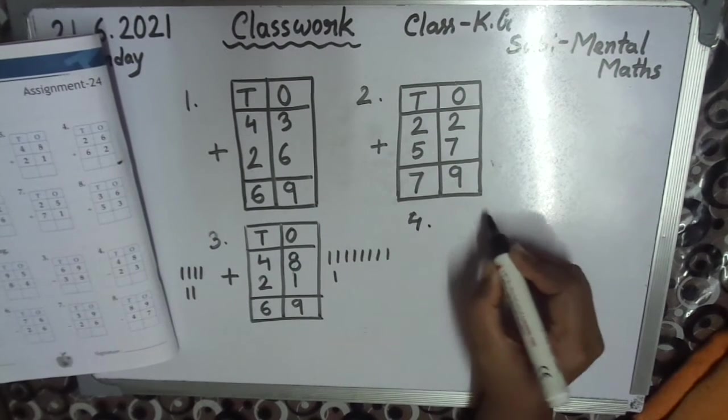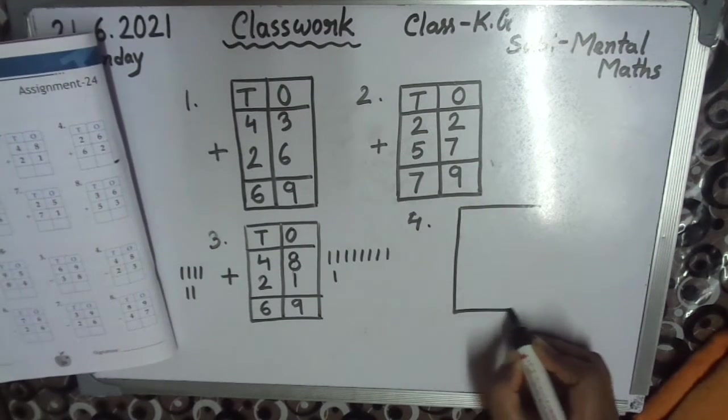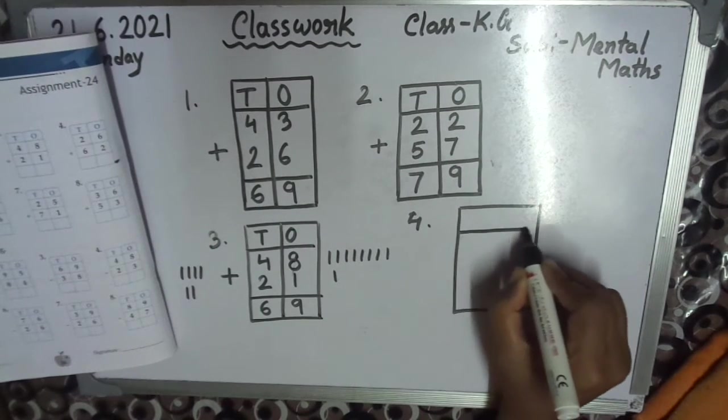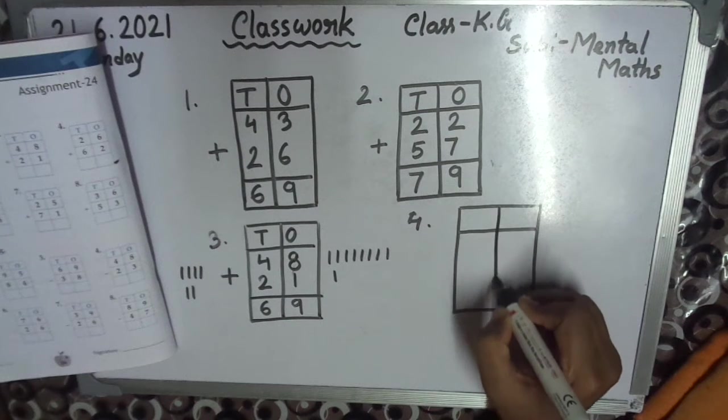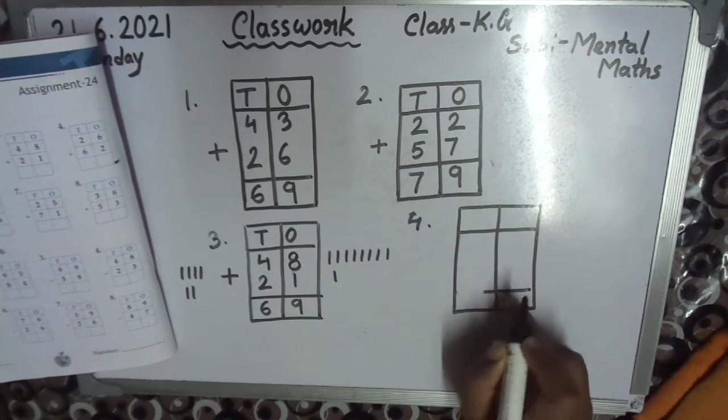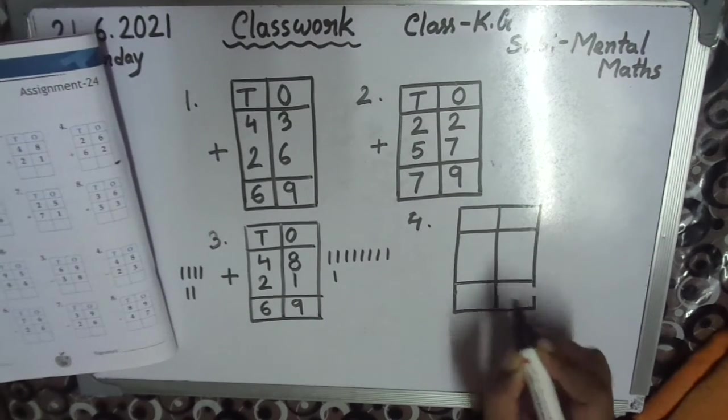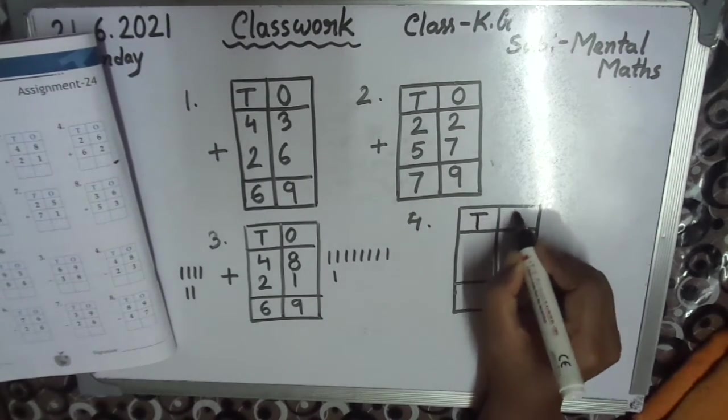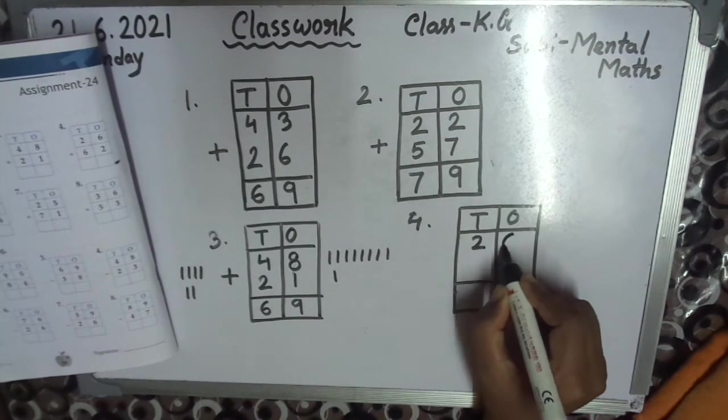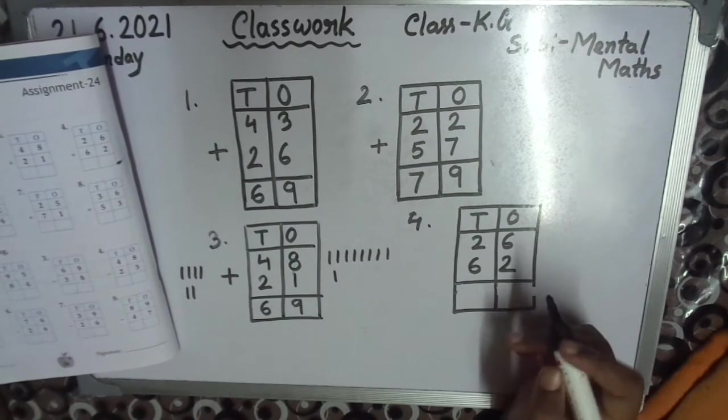Question 4. Tens, ones. Question 4: 26+62. Same number.